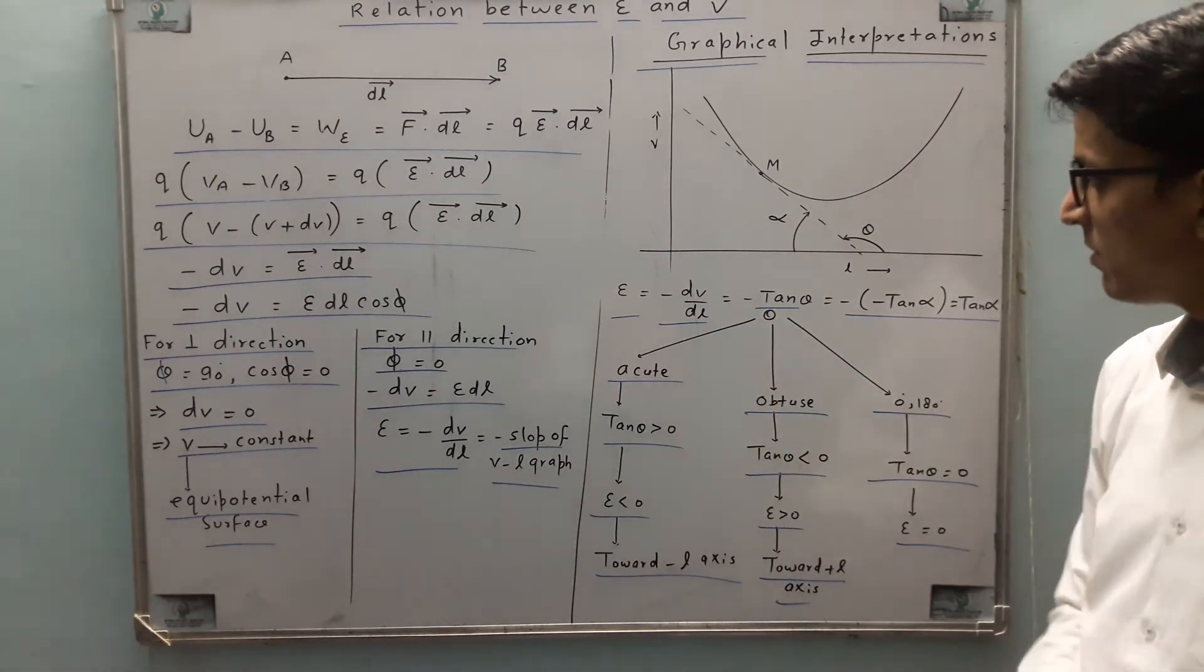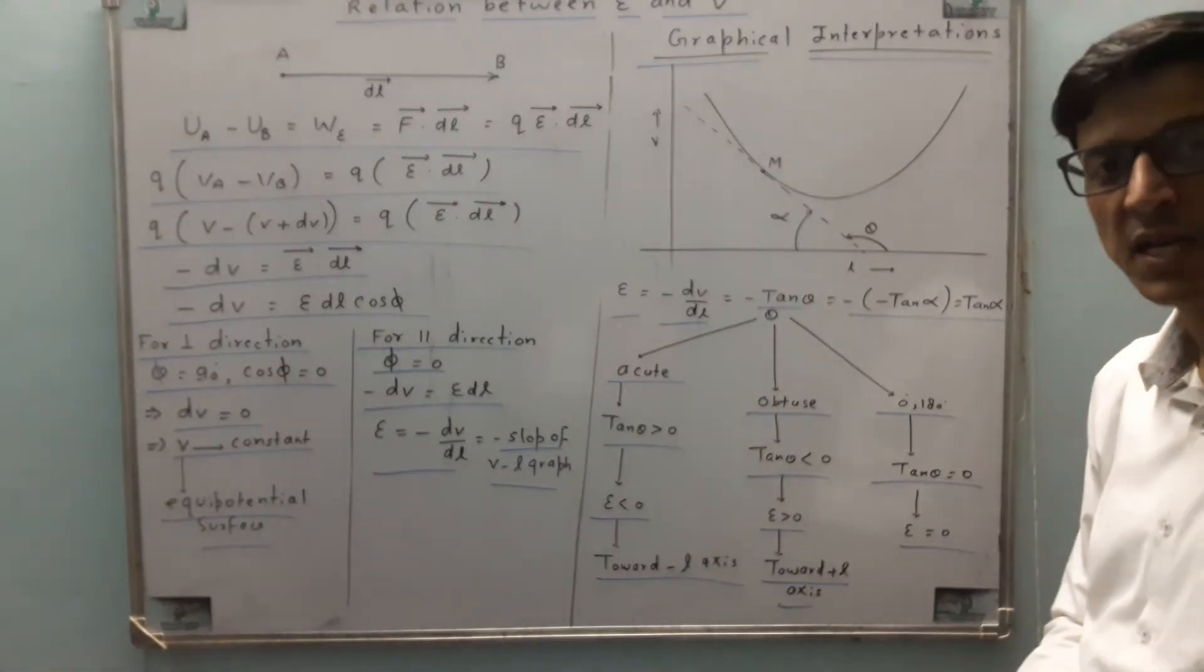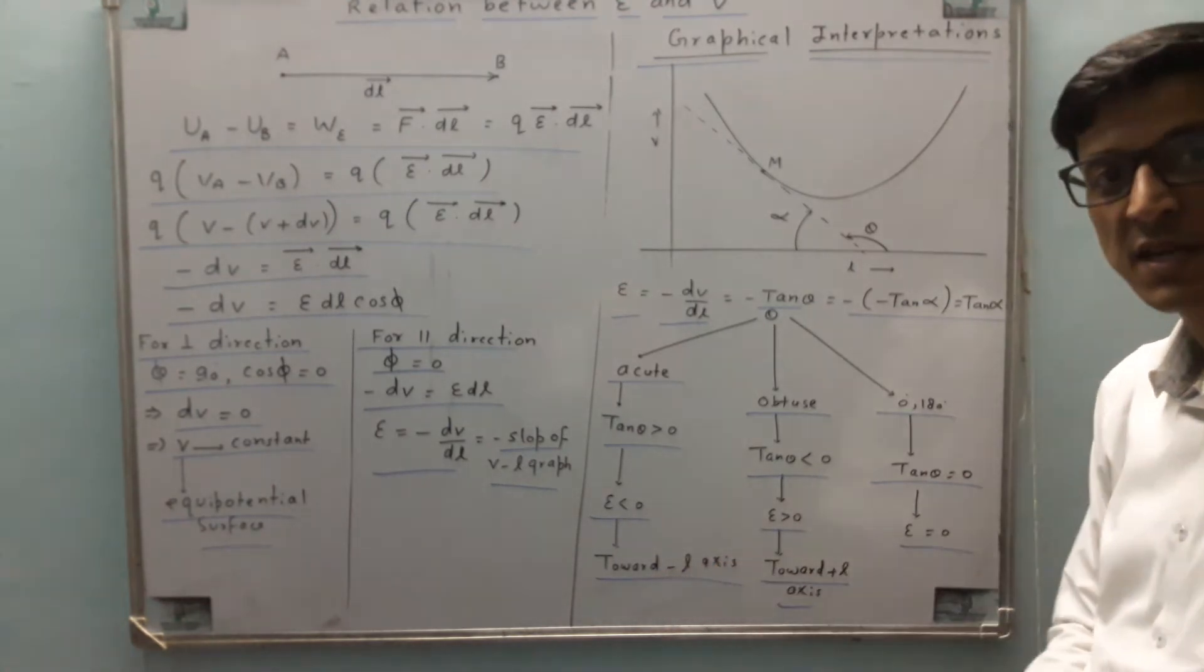If theta is acute, tan theta is positive, which means E is negative. That means electric field is toward the minus L axis.